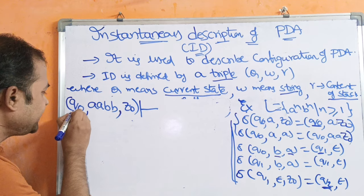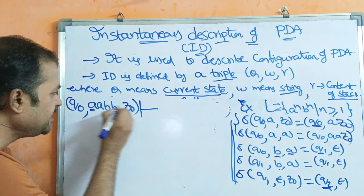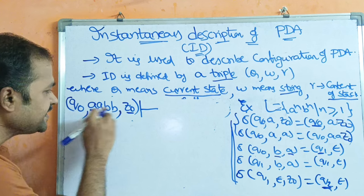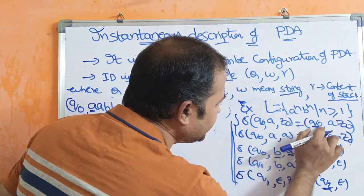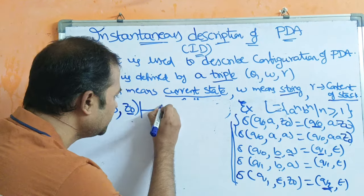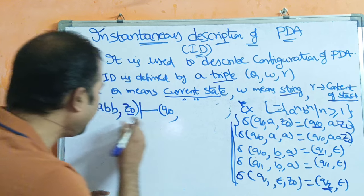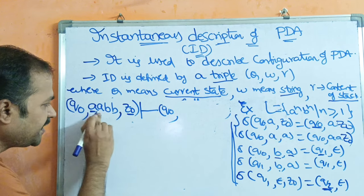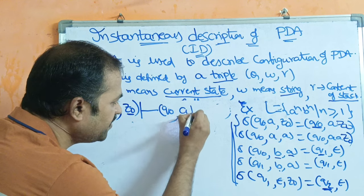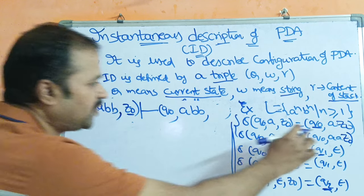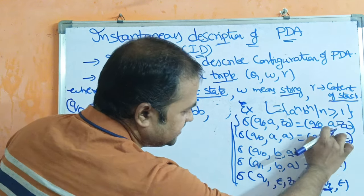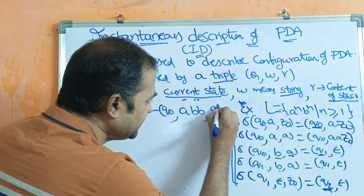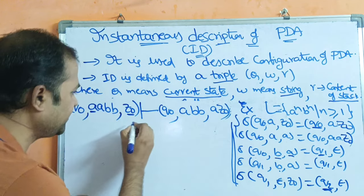Here the current state is Q0, input symbol is A, and the stack is empty, so (Q0, AB, Z0) moves to: next state Q0, this A is completely processed, the remaining input string is B, and the content of the stack is now AZ0.